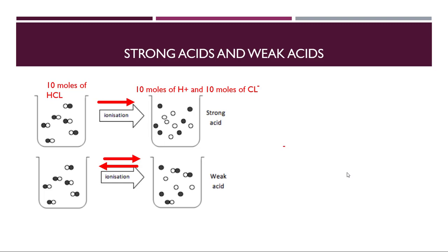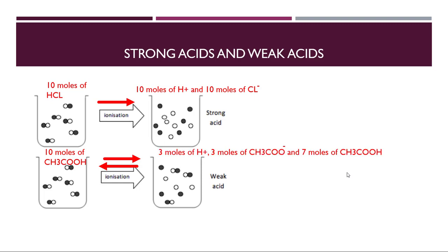Now look at acetic acid. If we take 10 moles of acetic acid and put it in solution, 3 moles of protons, 3 moles of acetate, and 7 moles of acetic acid remain. This tells us it's not completely dissociated — some molecules dissociate but others remain intact. This is what happens with weak acids and weak bases, where the reaction goes in both directions creating an equilibrium.